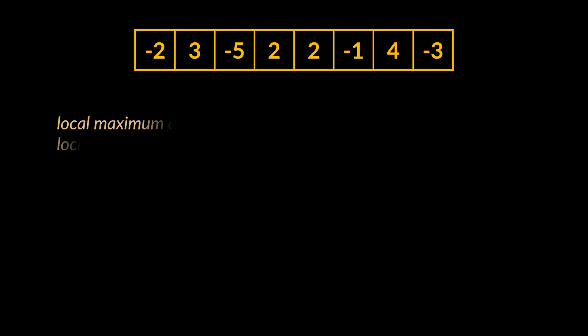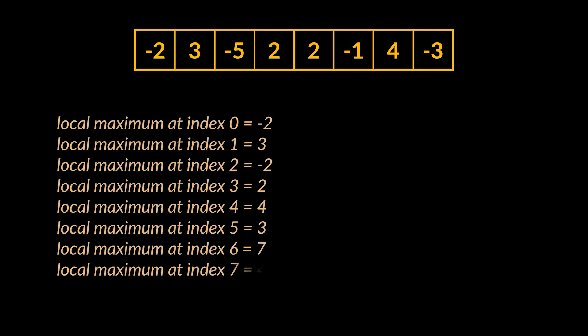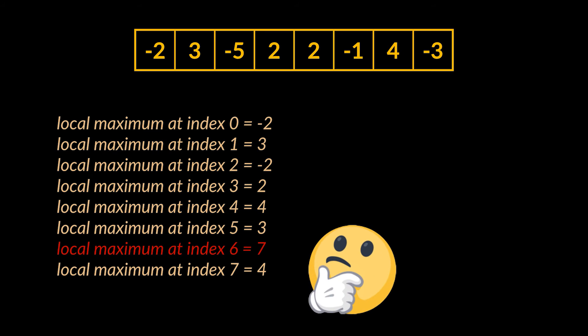Now suppose we manage to find all the local maximums at each index. Then we'd have gone through all the possible subarrays available, and the maximum of these local maximums will be our global maximum, or in other terms, our result.